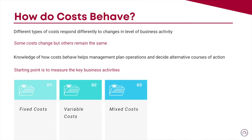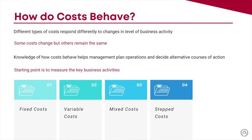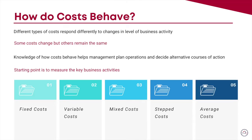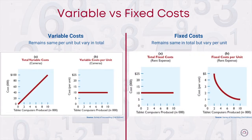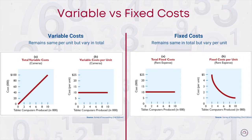For example, utilities are a mixed cost. Stepped costs are constant within a particular level of activity, but can increase when activity reaches a critical level—an example is heating costs after expansion of a building. Average costs represent the total of both fixed and variable costs divided by the total number of units produced. Variable costs vary in total with changes in activity but remain fixed per unit, as shown in the graphs on the left. In contrast, fixed costs remain the same in total regardless of level of activity but vary per unit, as shown in the graphs on the right.